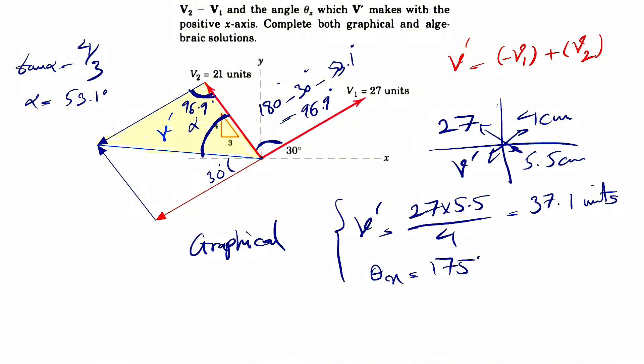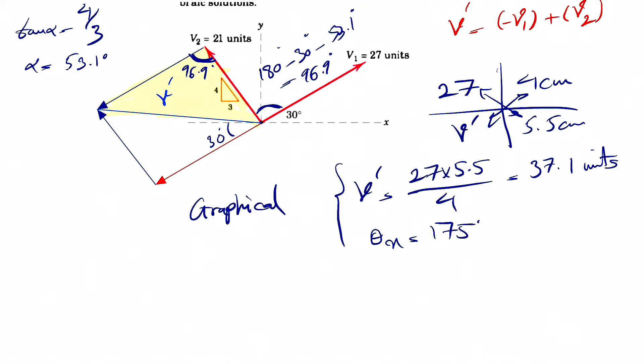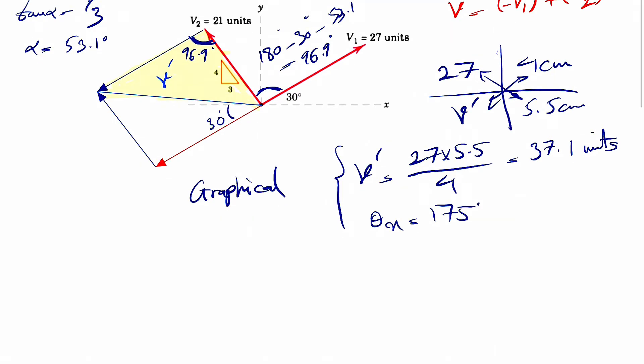We should be able to find V prime using the law of cosines. So V prime squared is equal to V1 squared, 21 squared, plus V2 squared, 27 squared, minus actually V1 is 27 and V2 is 21, minus 2 times 21 times 27 times cosine of 96.9.